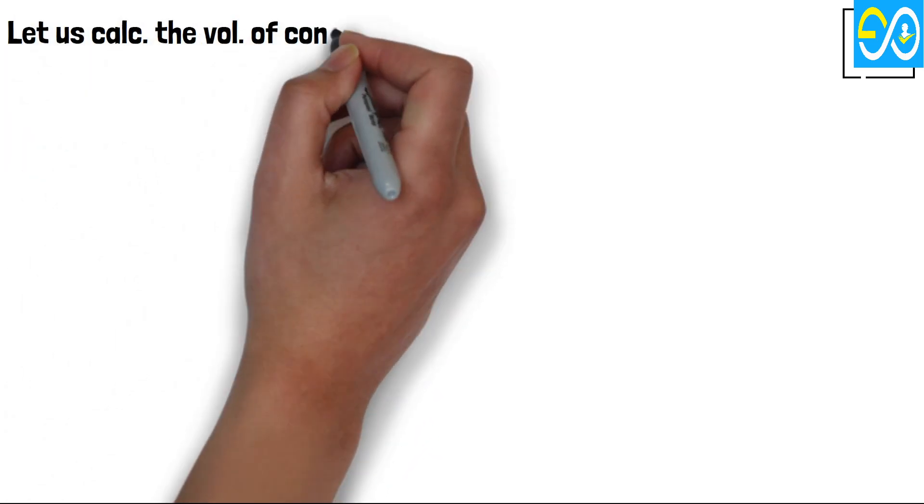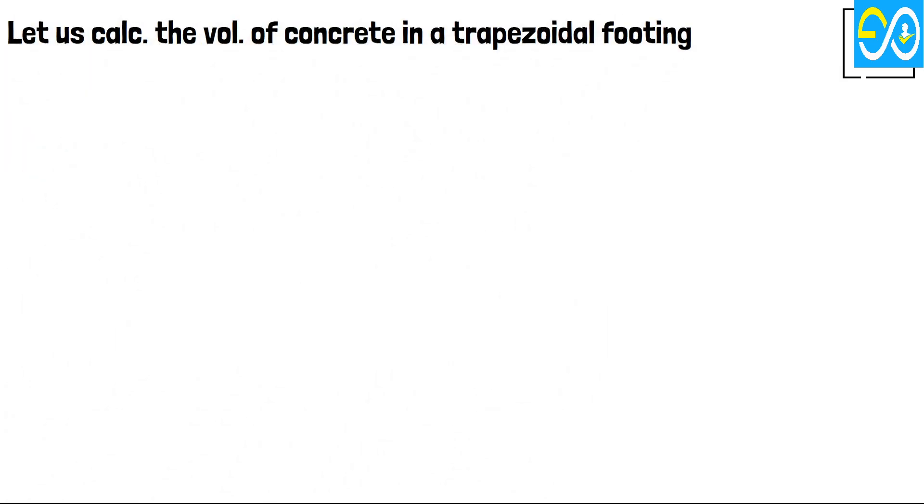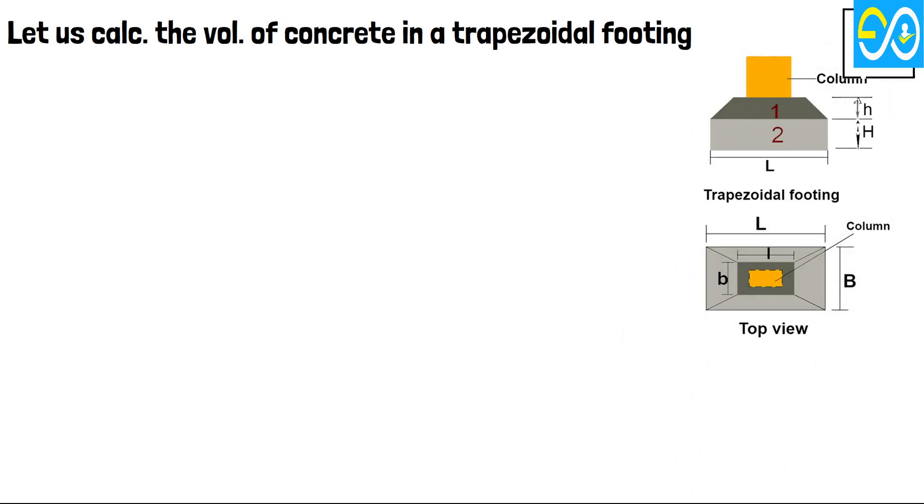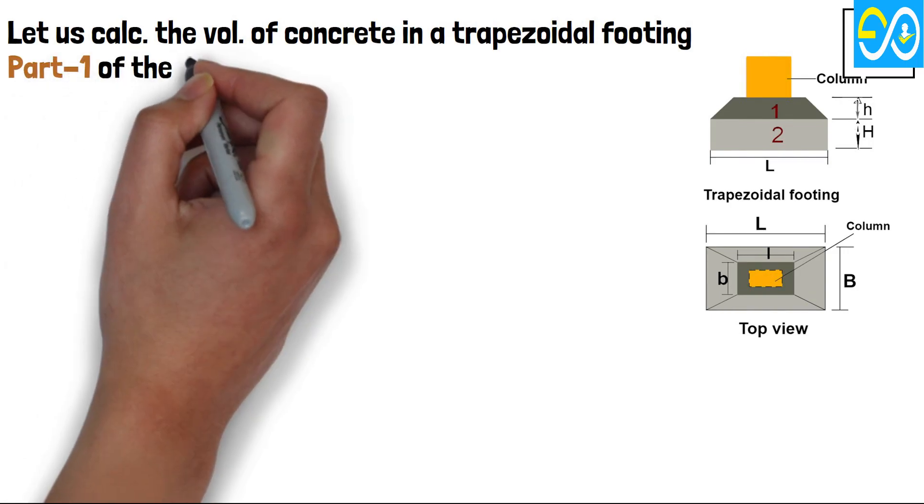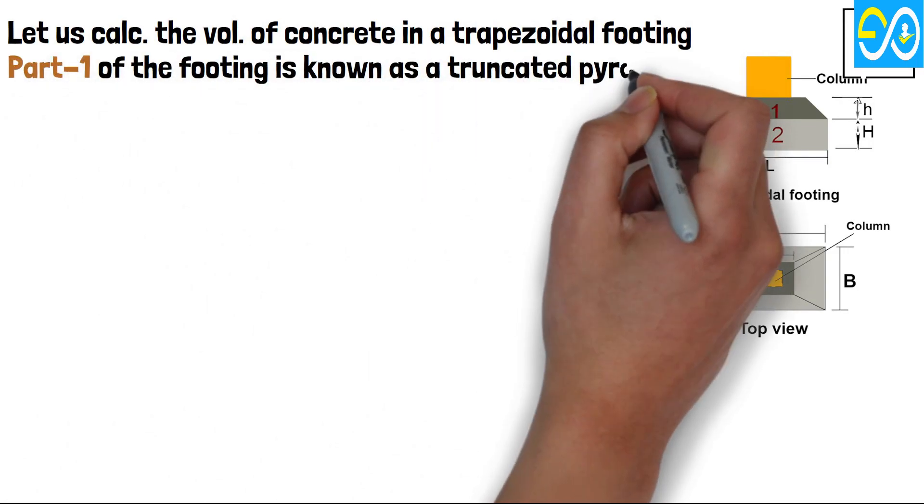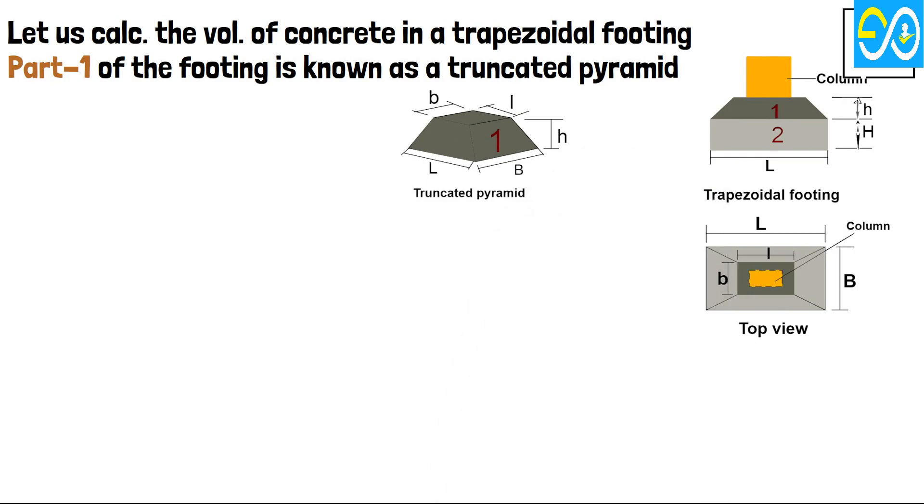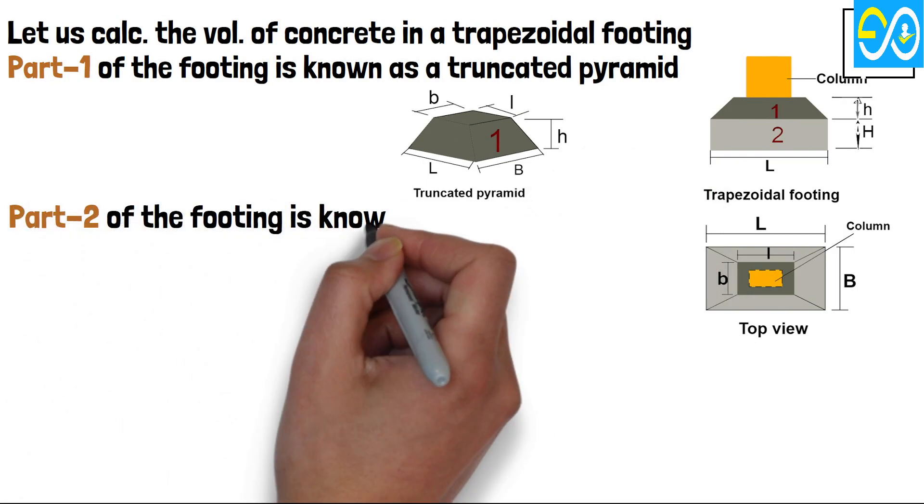Let us calculate the volume of concrete in a trapezoidal footing. The volume of the trapezoidal footing is calculated into two parts as it is made of two different shapes. Part 1 of the footing is known as a truncated pyramid. Part 2 of the footing is known as a cuboid.